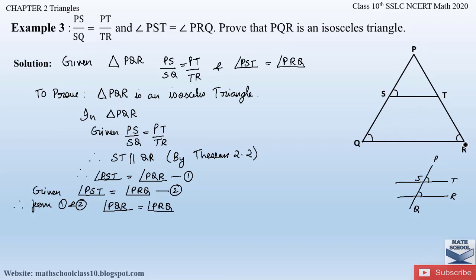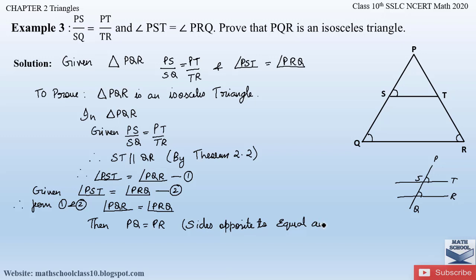In a triangle, if any two angles are equal, then the sides opposite to those equal angles are also equal. Since angle PQR is equal to angle PRQ, it follows that side PQ is equal to side PR — sides opposite to equal angles are equal. Therefore, since PQ equals PR, we have proved that triangle PQR is an isosceles triangle.